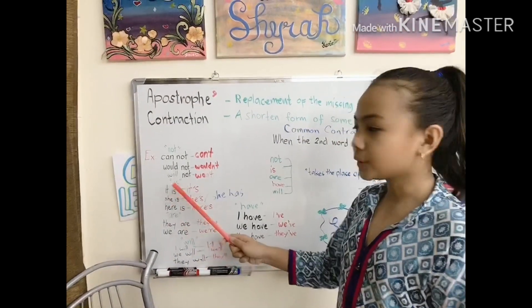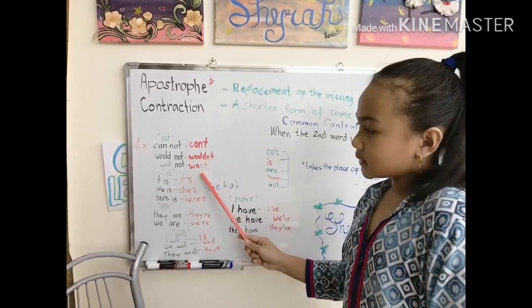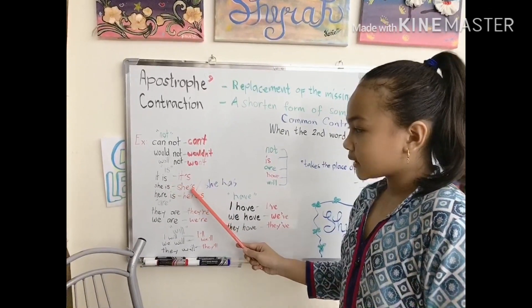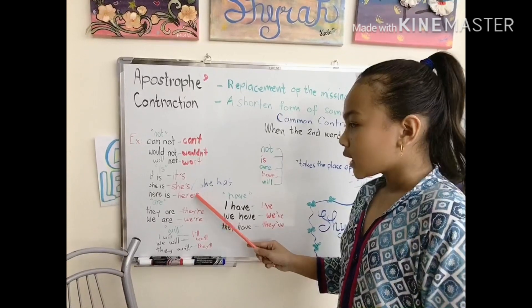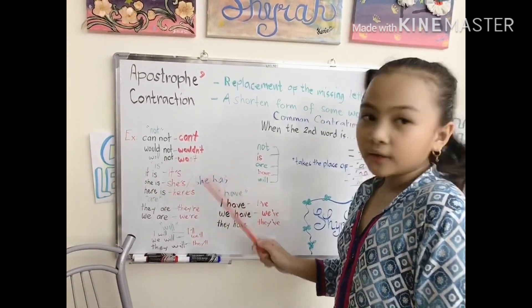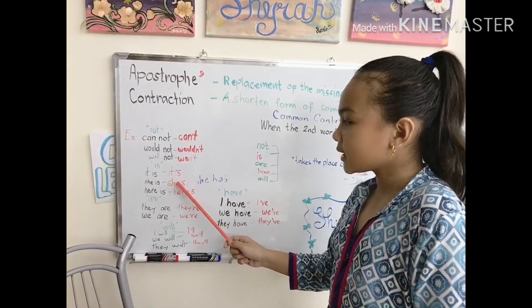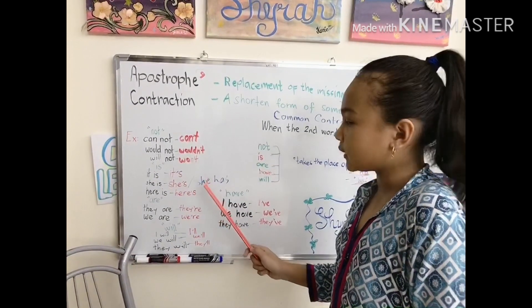Now second word using is. It is becomes it's. She is becomes she's. Here is becomes here's. But this is the present tense. If you're using the past tense, you have to write it she apostrophe s, but you have to read it she has.